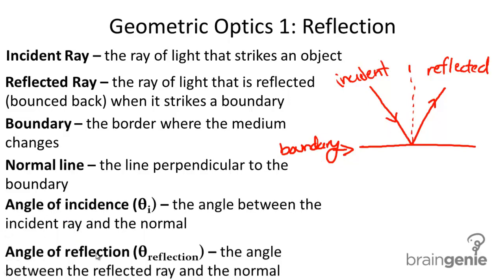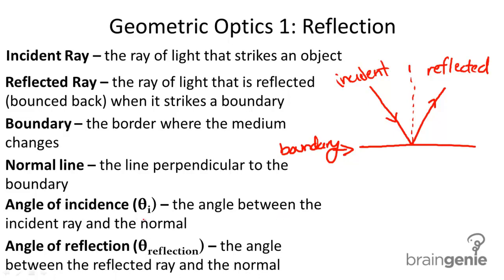And then lastly I have the angle of incidence and the angle of reflection. The angle of incidence is the angle between the incident ray and the normal. So that's my angle of incidence.